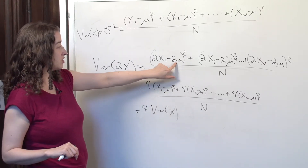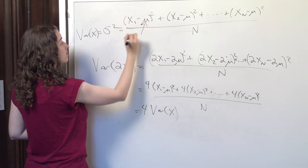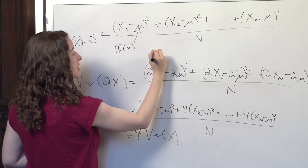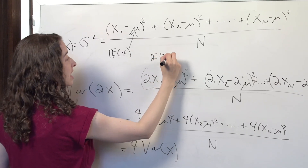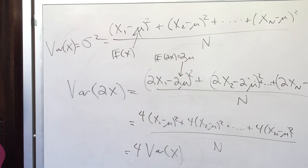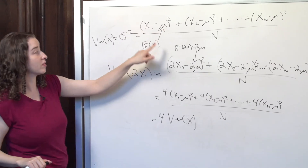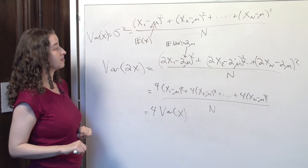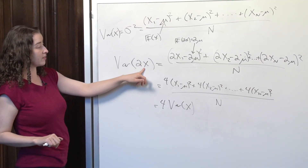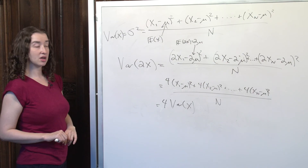I want to make sure it's completely clear why I put the 2 there. Remember that this mu is just the expectation of x. So if I take the expected value of 2 times x, by the linearity property we just talked about, that's equal to 2 times mu, which is what we have right there. The definition of variance is how far a value is from the mean of that value. If we double all the values, then we also have to double the mean. So this is a property of variance: if you multiply the random variable by a constant, you have to square that constant when it comes out of the variance operator.